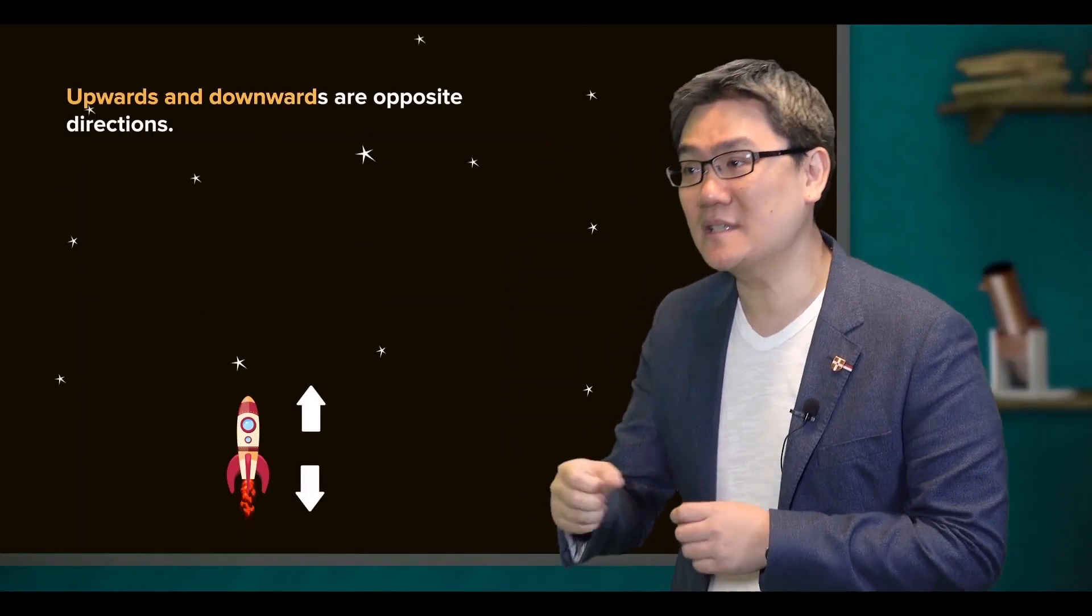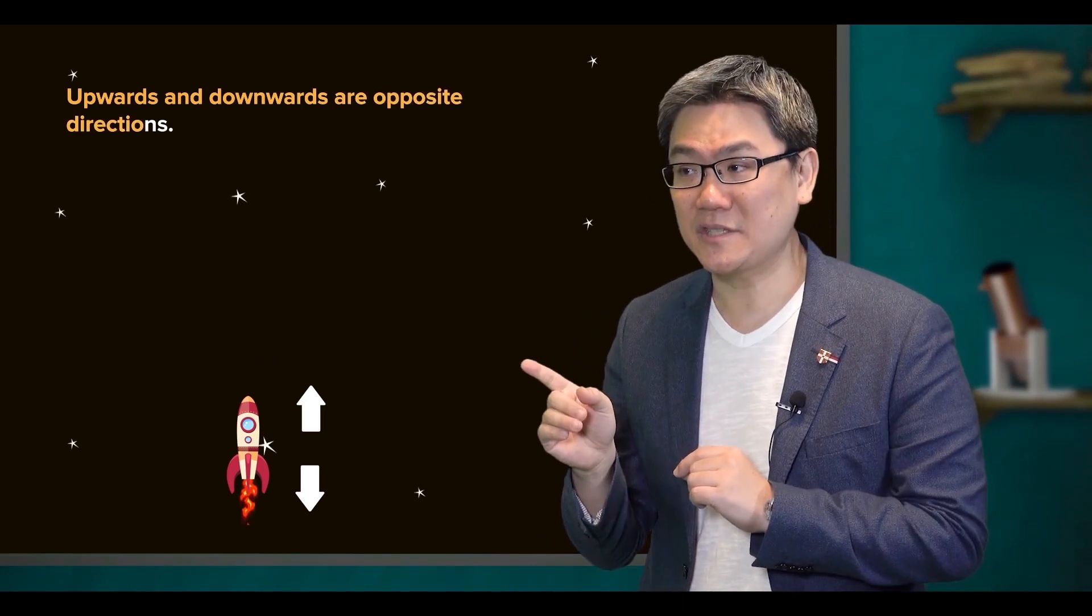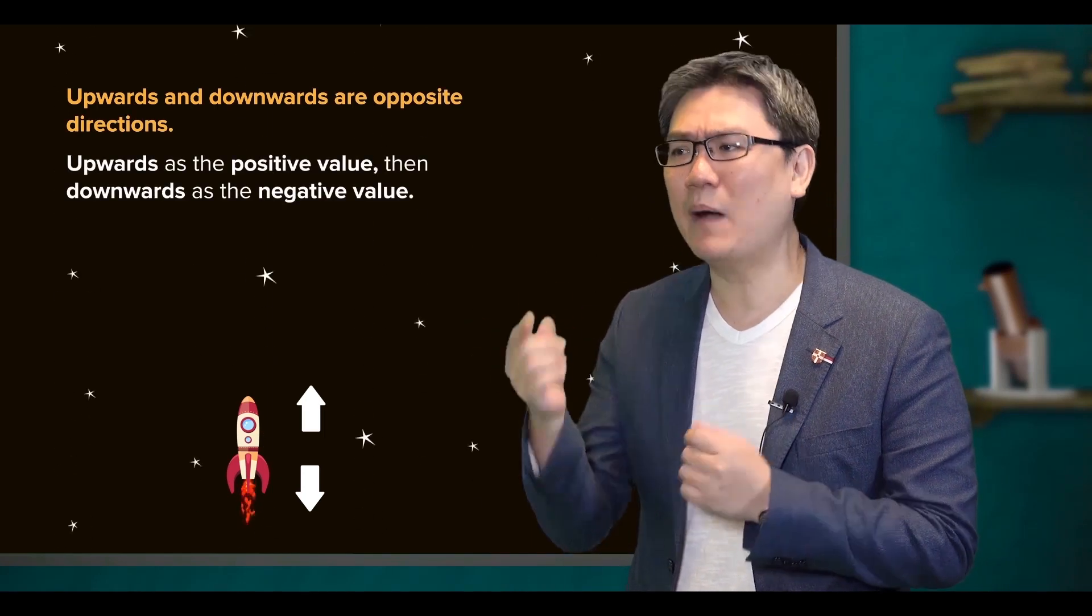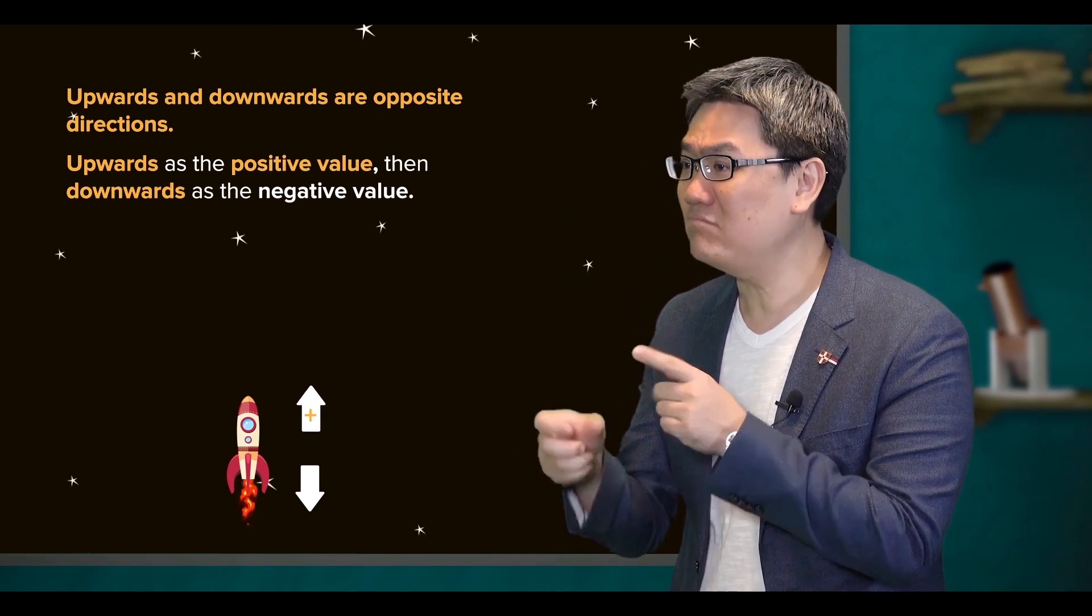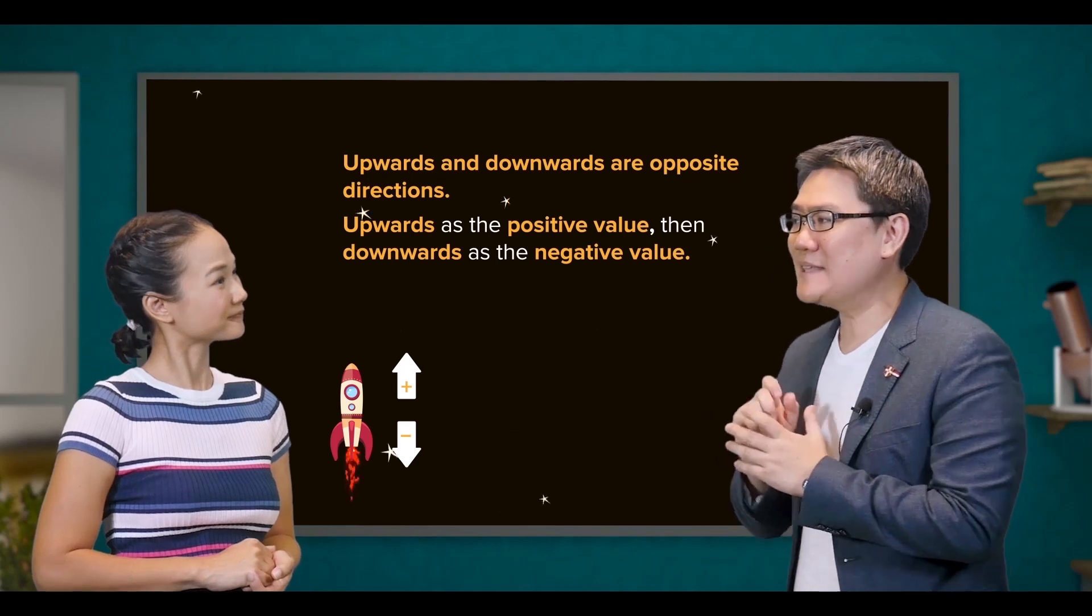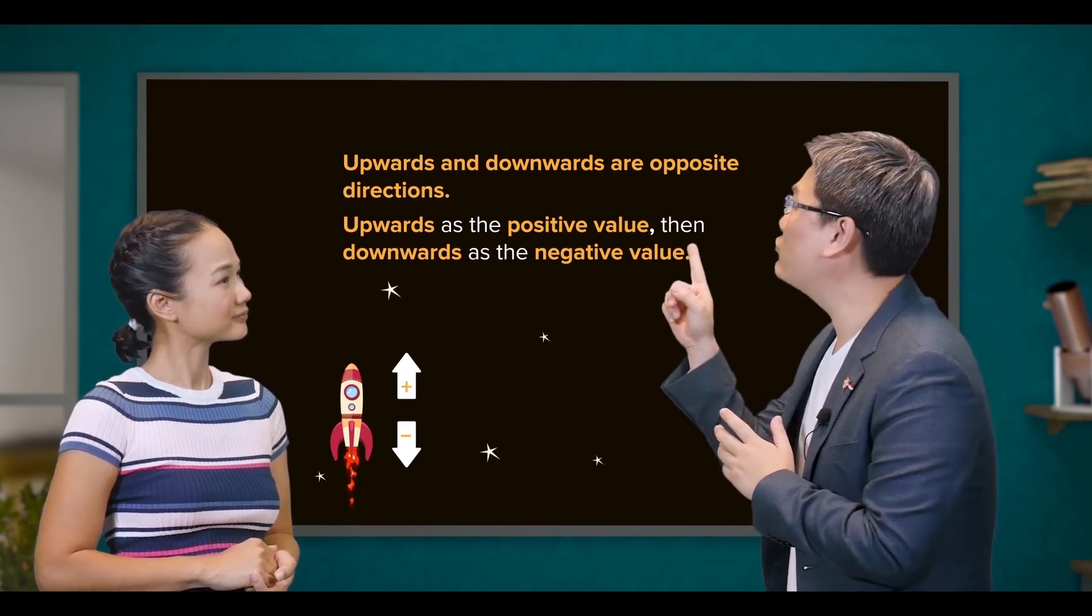Upwards and downwards are opposite directions. So you would assign upwards as the positive value, then downwards would be the negative value. Let's take a look at this rocket here.